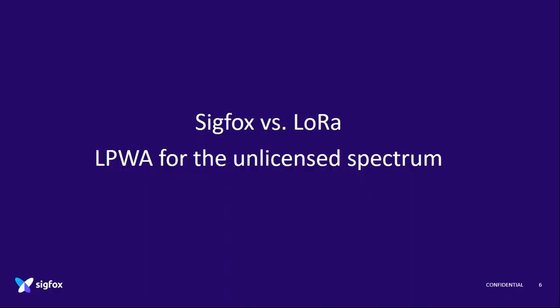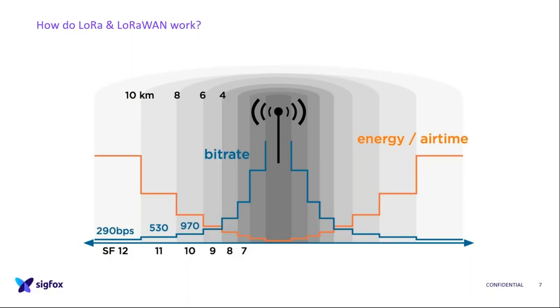Now let's start with the comparison between Sigfox and LoRa. These are the two main technologies using the unlicensed spectrum. With LoRa, there are two kinds of networks: private LoRa networks, and public LoRaWAN networks deployed by mobile operators.